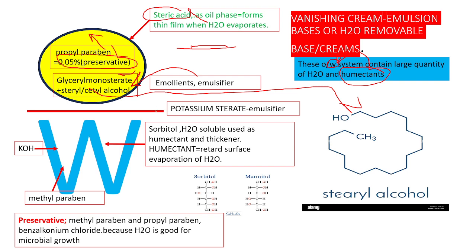The main emulsifier is potassium stearate. Potassium hydroxide, which is water-soluble, is added to the water system. The potassium hydroxide reacts with the glyceryl monostearate — the stearic acid-containing component — to form potassium stearate, which then acts as the emulsifier.